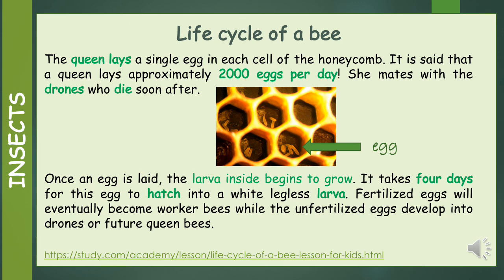The queen lays a single egg in each cell of the honeycomb. It is said that a queen lays approximately 2,000 eggs per day. She mates with the drones, who die soon after. Once an egg is laid, the larvae inside begins to grow. It takes four days for this egg to hatch into a white, legless larva. Fertilized eggs will eventually become worker bees, while the unfertilized eggs develop into drones or future queen bees.